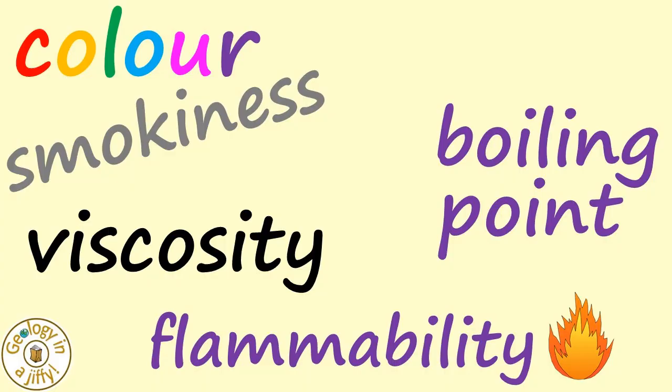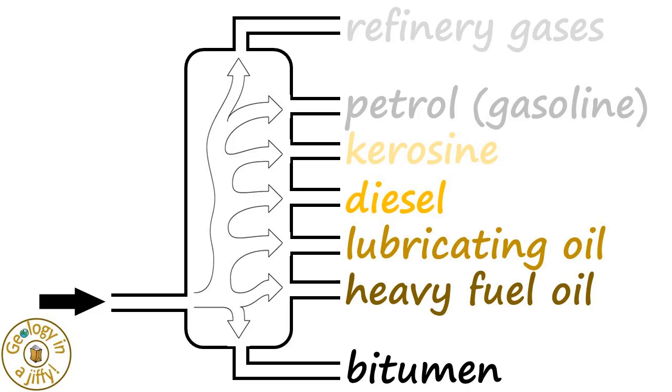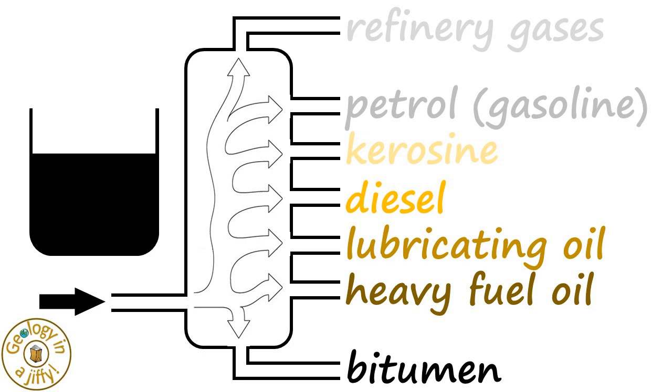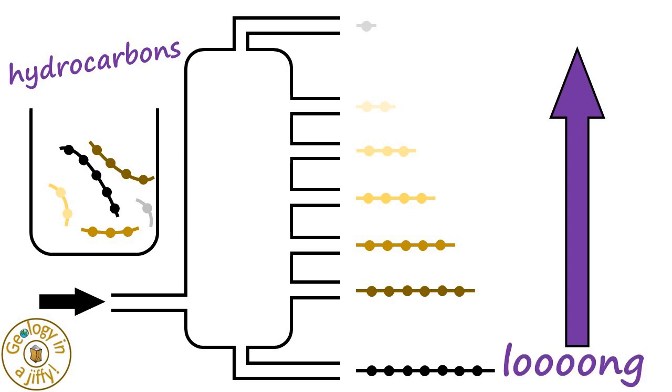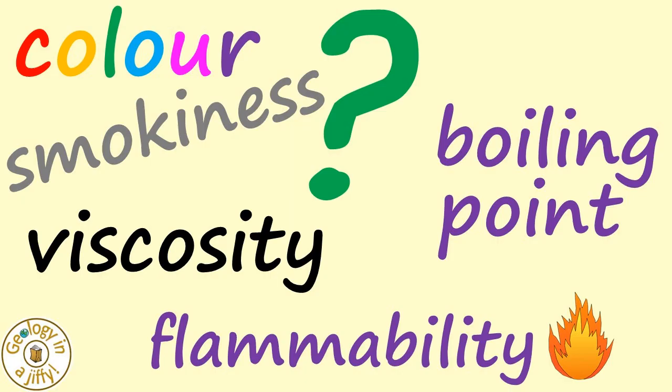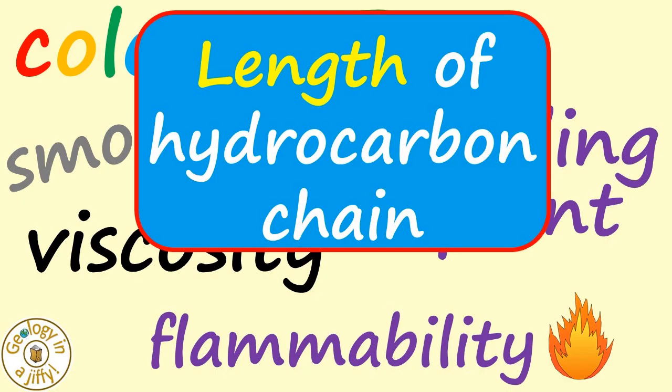So with our properties of colour, smokiness, boiling point, viscosity and flammability, what links them all together? We know that these fractions are obtained from the tower, but inwards is put crude oil, which if we study more closely, we see it is made up of covalently bonded hydrocarbon compounds. If we study the order in which these fractions condense from the tower, we see this pattern of length of hydrocarbon chains, which going from the base to the top of the tower are very long at the base, to much shorter at the top. So the factor that links these five properties is the length of the hydrocarbon chain.